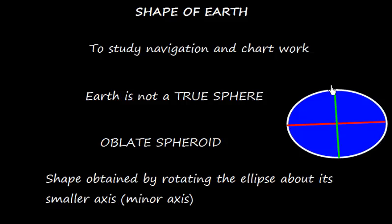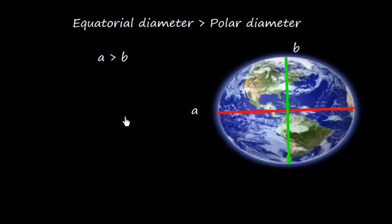If it is rotated about the minor axis, we get the shape of oblate spheroid. In case of Earth, we'll have two diameters: one is equatorial diameter and one is polar diameter. This one is the equatorial diameter and this one is the polar diameter.